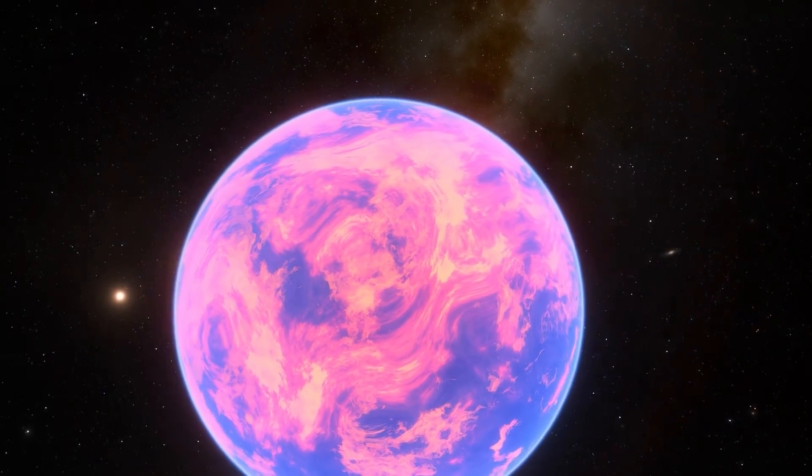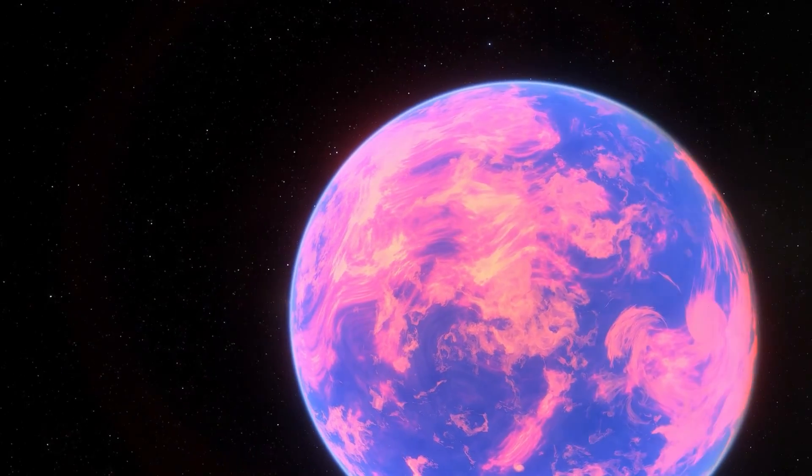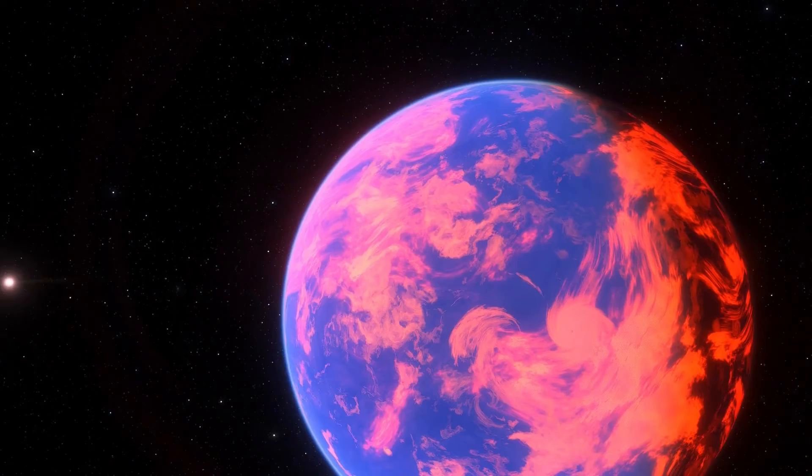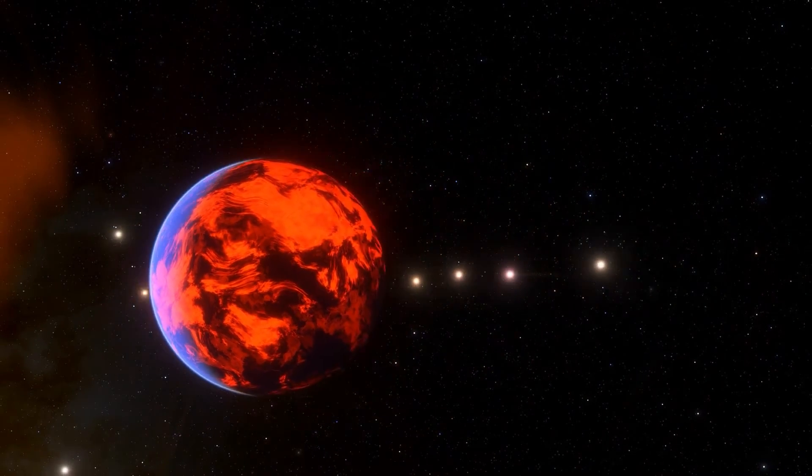The astronomers calculated that Gliese 581g had a mass three to four times that of Earth. They concluded that the planet is likely a rocky one, with sufficient gravity to support an atmosphere based on its mass and estimated size.